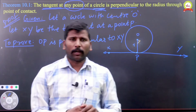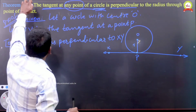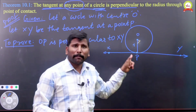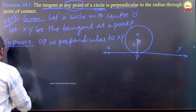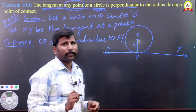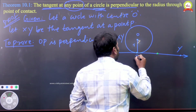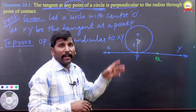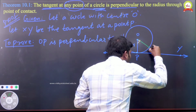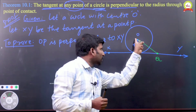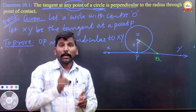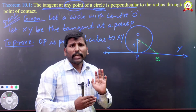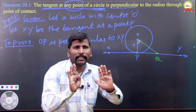Now we are going to give the proof one by one. On the line XY, take any point — suppose I am taking a point Q here. Join the point Q with O. The very important thing is: Q must lie outside the circle, not inside the circle.